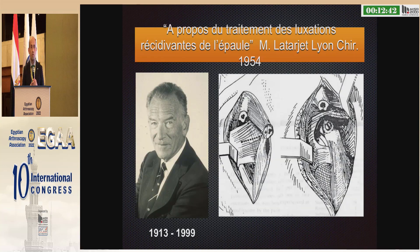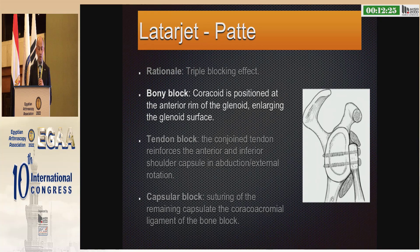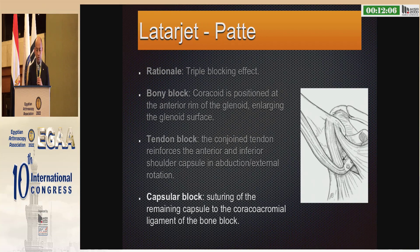The LATARJET procedure is not new. It's an old technique described in the middle of the last century by Dr. LATARJET in Lyon, France. Its rationale is a triple blocking effect: the bony effect, where the coracoid is positioned at the anterior rim of the glenoid enlarging the glenoid surface; the tendon block, which works like a sling where the conjoint tendon reinforces the anterior and inferior shoulder capsule in abduction and external rotation; and the capsular block through suturing of the remaining capsule to the coracoacromial ligament of the bone block.